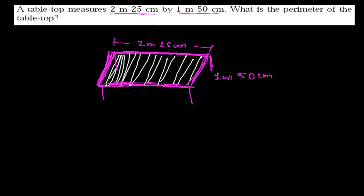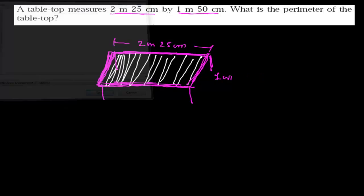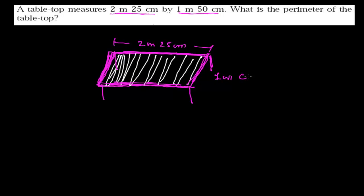1 meter 50 centimeter. My pen is not working properly, I'm sorry. 1 meter and 50 centimeter, fine. So this is our breadth. Now perimeter, this is a rectangular object, so perimeter of any rectangle we can easily find out by the formula 2 times the length plus breadth.